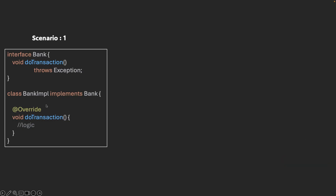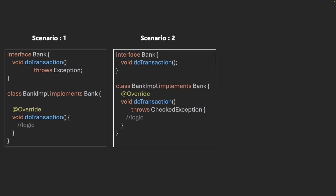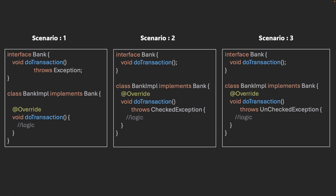For example, in scenario one, there is an interface called Bank with a doTransaction method, and we have an implementation class that overrides that particular method. The key thing to observe here is that Bank is the parent which throws the exception, but the overriding method in the child does not declare the throws keyword. In scenario two, the child throws a checked exception which is not declared in the parent interface or parent class. In scenario three, the child method is throwing an unchecked exception which is not declared in the parent interface. Think about the answers and test yourself.